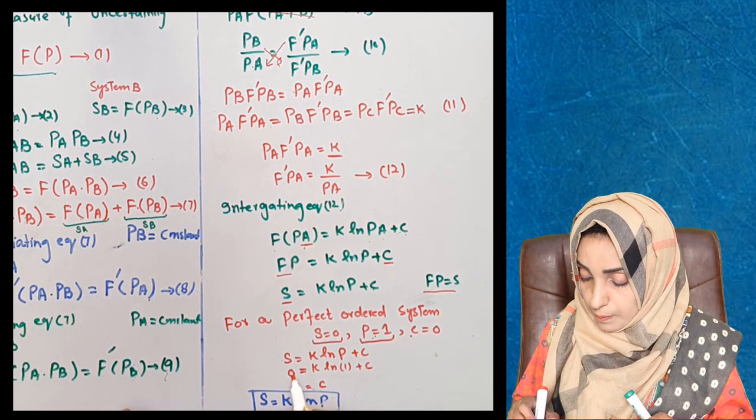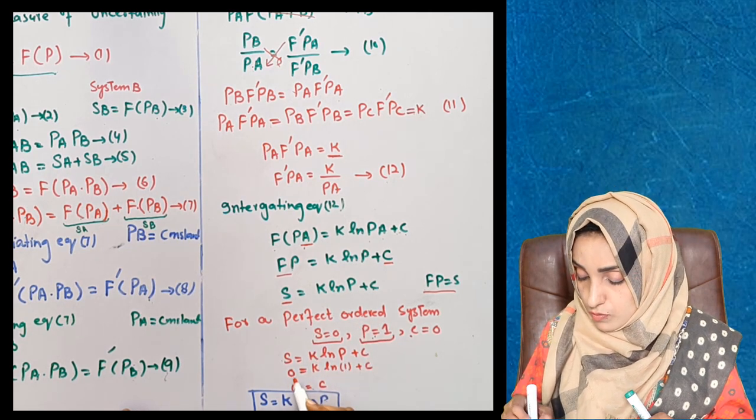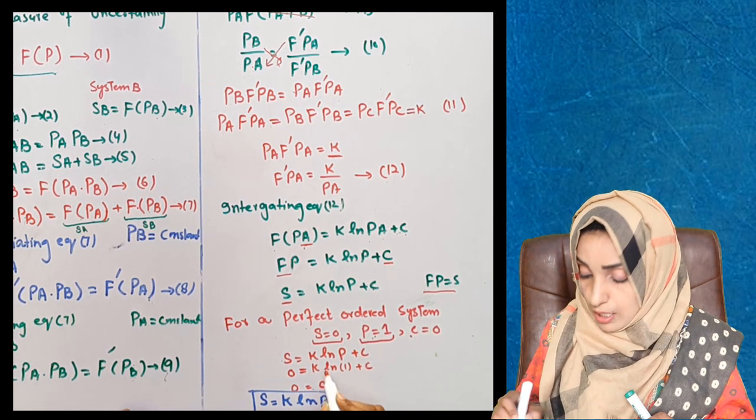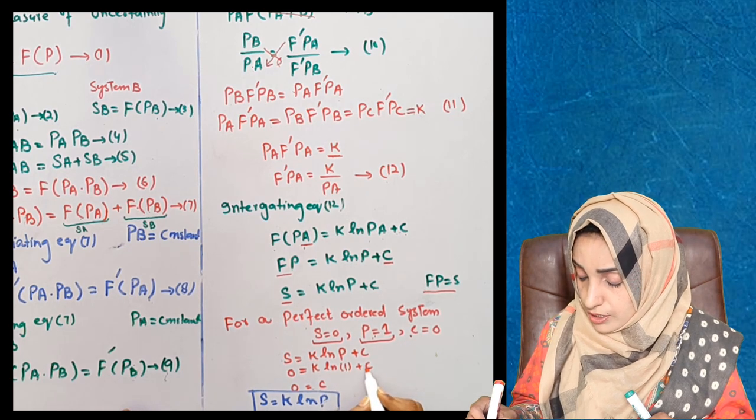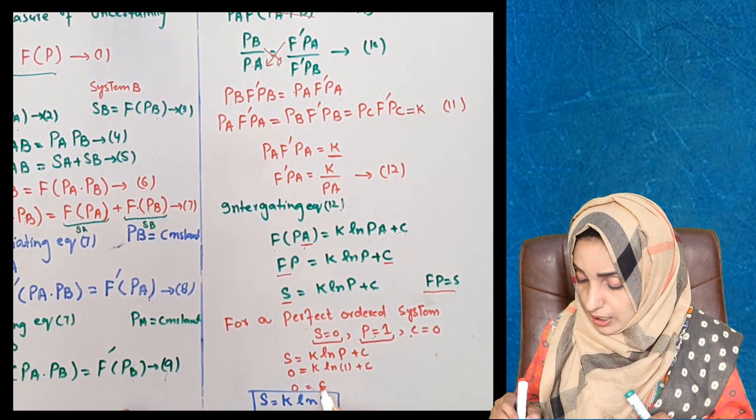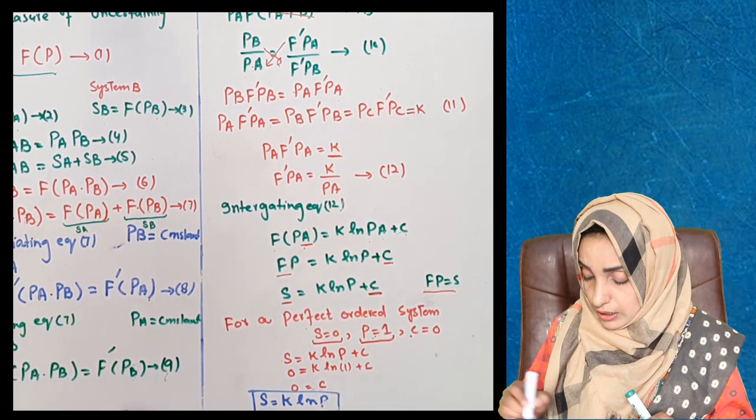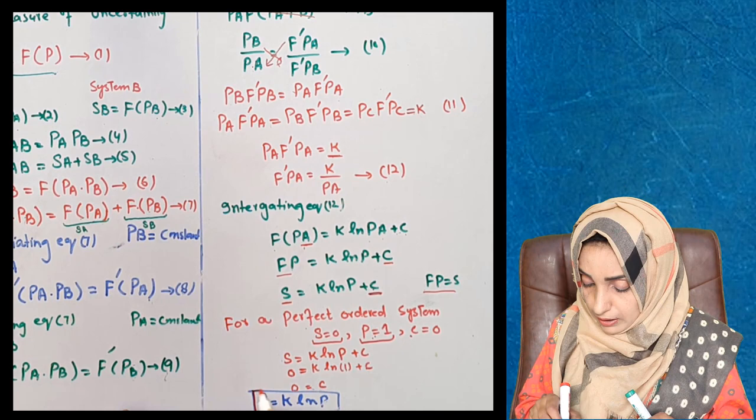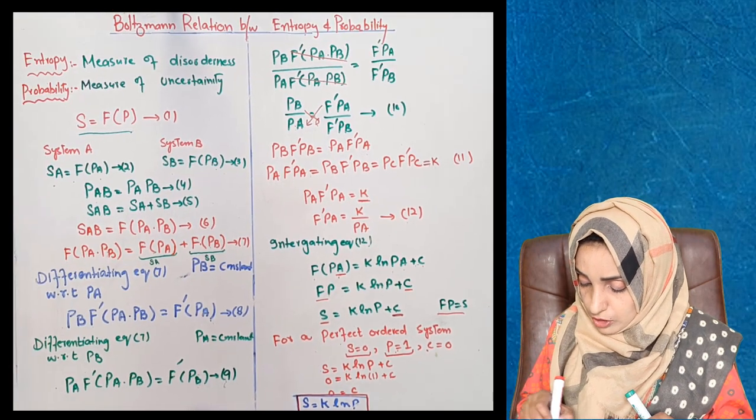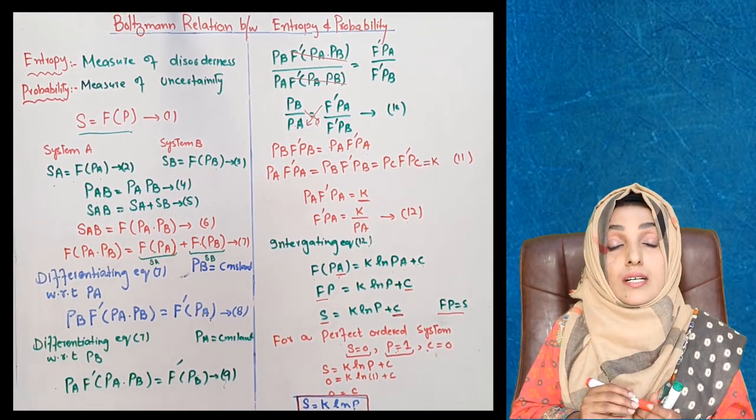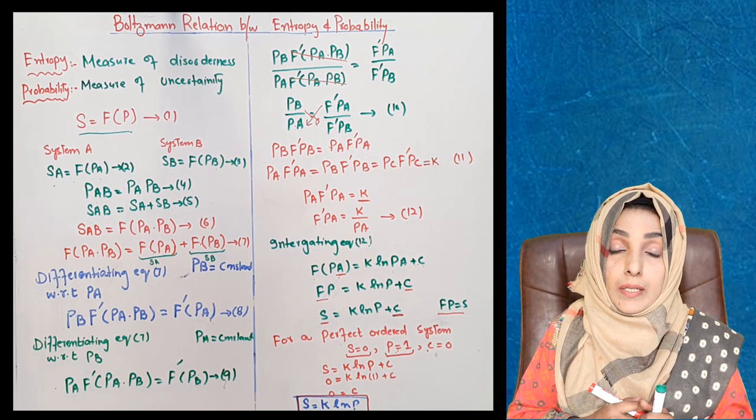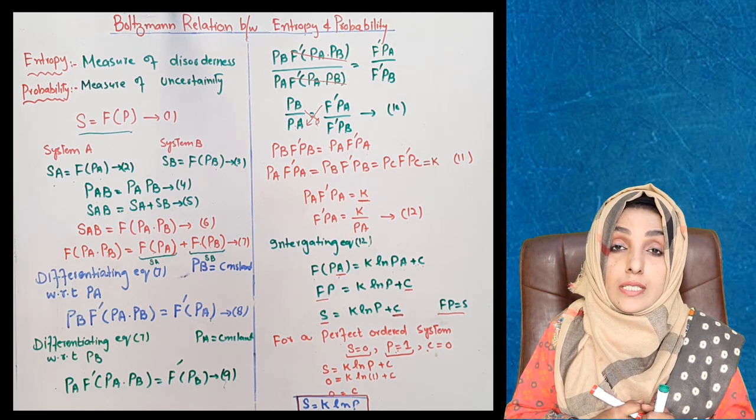We said that entropy for the perfect order system is zero, probability is one, and we can calculate the value of C, so that C will equal to zero. When we put the value of C equals zero here, we get Boltzmann's mathematical expression which is telling us the relationship between entropy and probability of a perfectly ordered system.